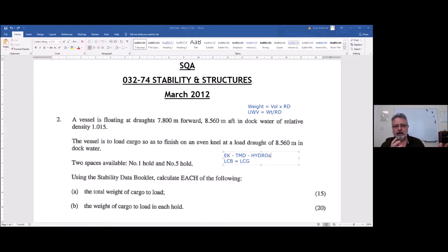We got initial, we got final. That's simply going to be the difference in displacement. To get the displacements, we need TMD. Initial TMD, initial displacement. Final TMD, final displacement. Part B, weight of cargo to load into each hold. That's going to happen in the LCG table because three columns: weight, LCG, longitudinal moments.